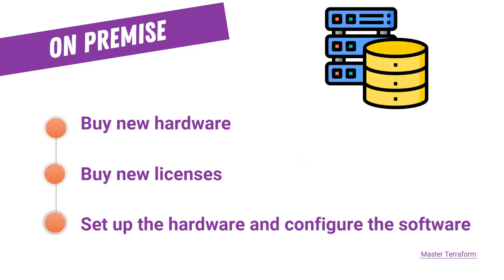So just imagine that your company needs to deploy a new application. Using the on-premise approach, the company needs to buy new hardware or upgrade the existing one to meet the new requirements, purchase new software licenses, and then the DevOps team needs to install and configure both the hardware and the software for the new application. And you'll also probably need an internet upgrade. That's not an easy job.